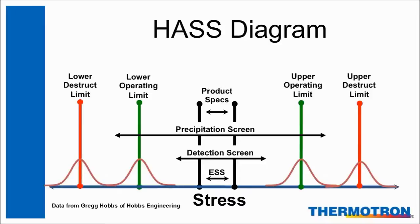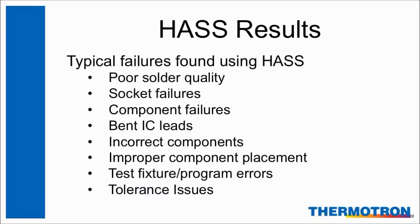Using the limits found in HALT along with the product's specifications, this diagram also shows where a typical ESS screen would fit in, within the product's specifications. During HASS, the operator will actually take the thermal and vibration stresses beyond the operating limits, but well short of the destruct limits. The detection screen will be well within the operating limits to determine if the product is working correctly. Some typical problems that can be found using HASS are poor solder quality, socket failures, component failures, bent IC leads, incorrect components, improper component placement, test fixture, program errors, and tolerance issues.